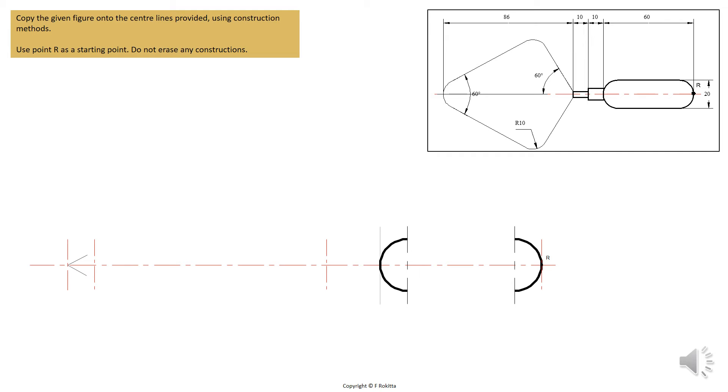This will complete the two ends of our handle. Now we will place the ruler lined up with the top end of the two arcs and draw a solid line. We will also line it up with the bottom end of the arcs and draw a solid line.